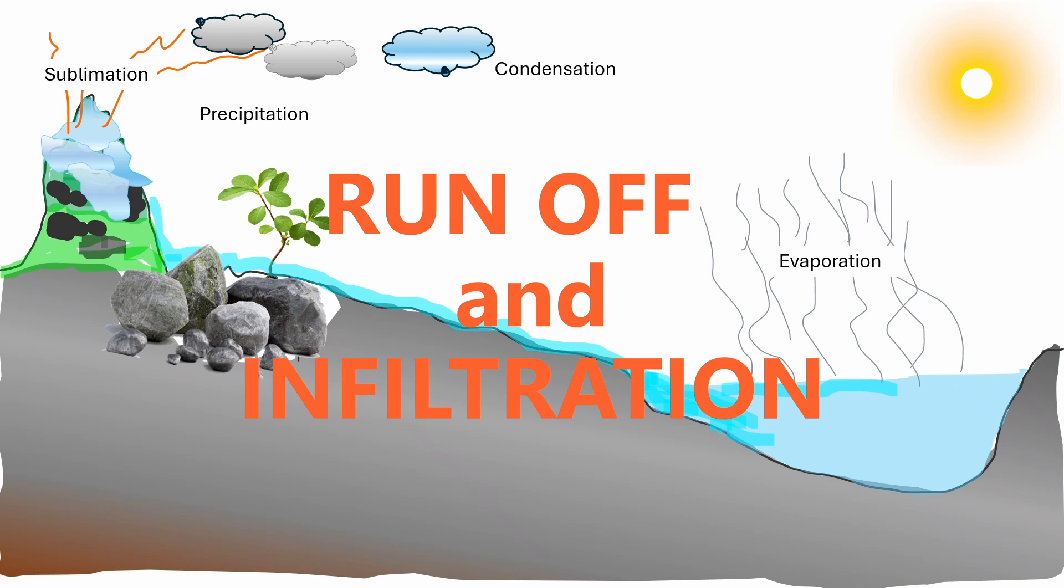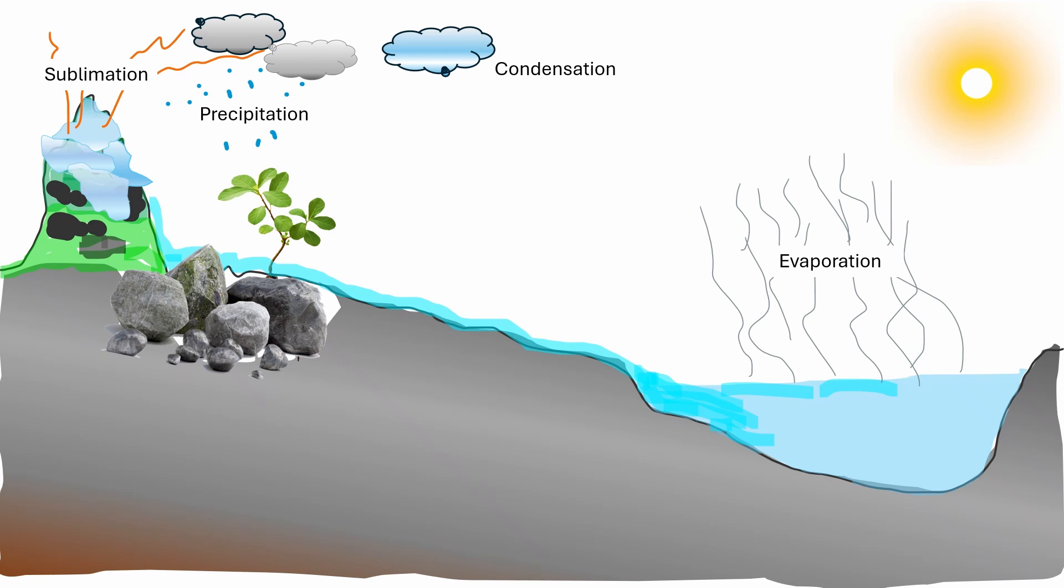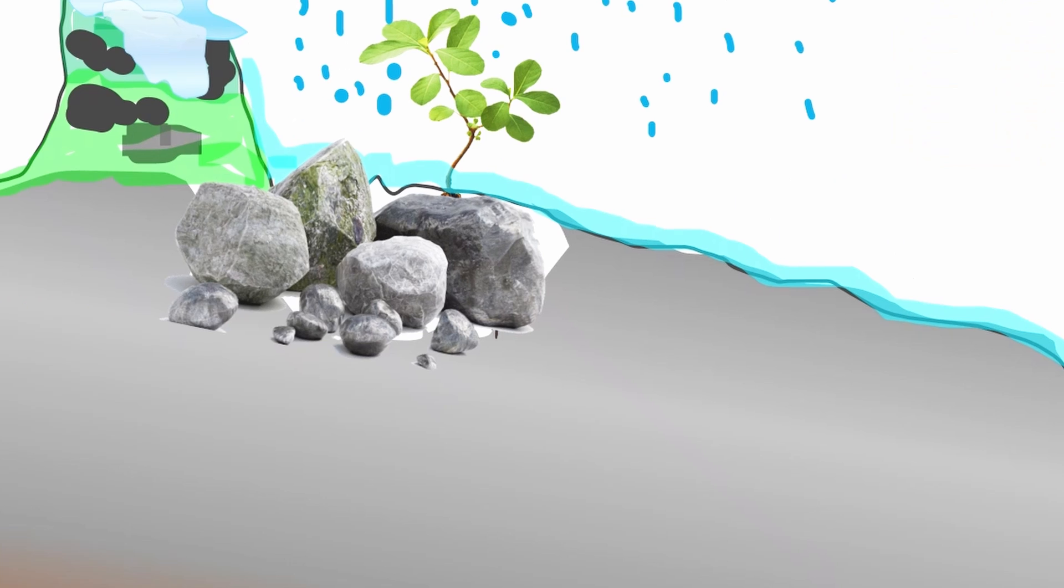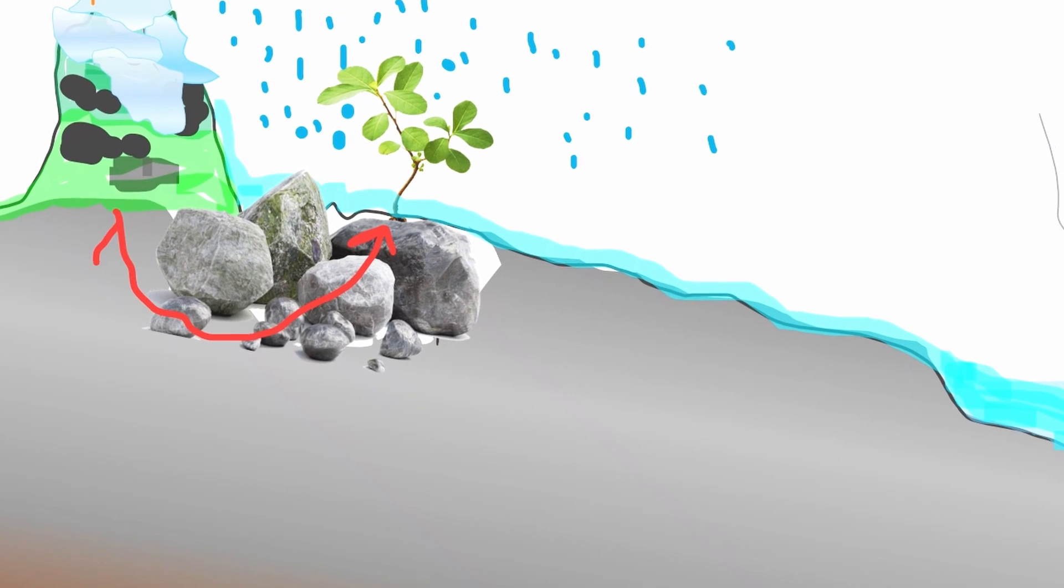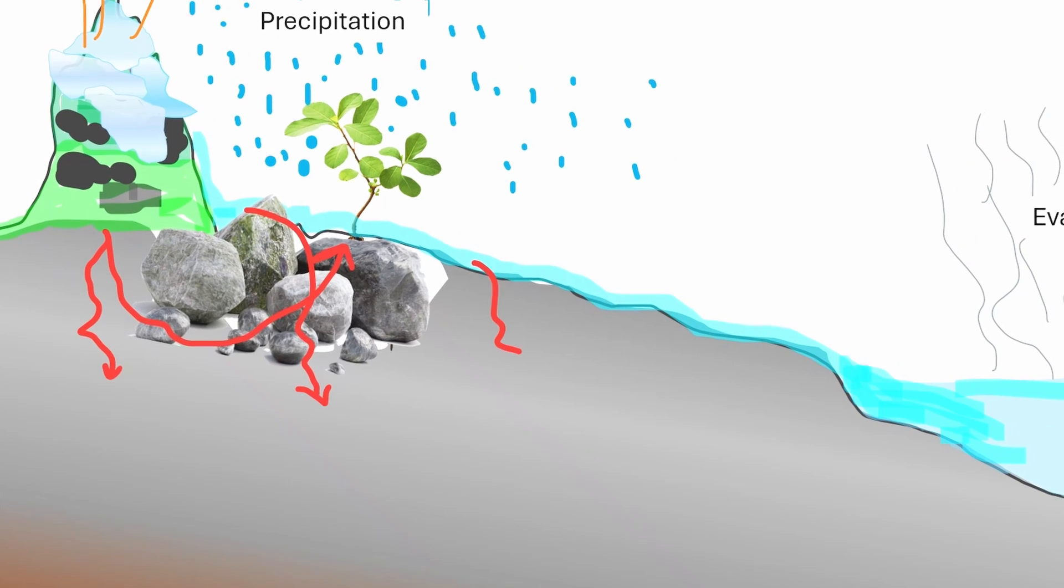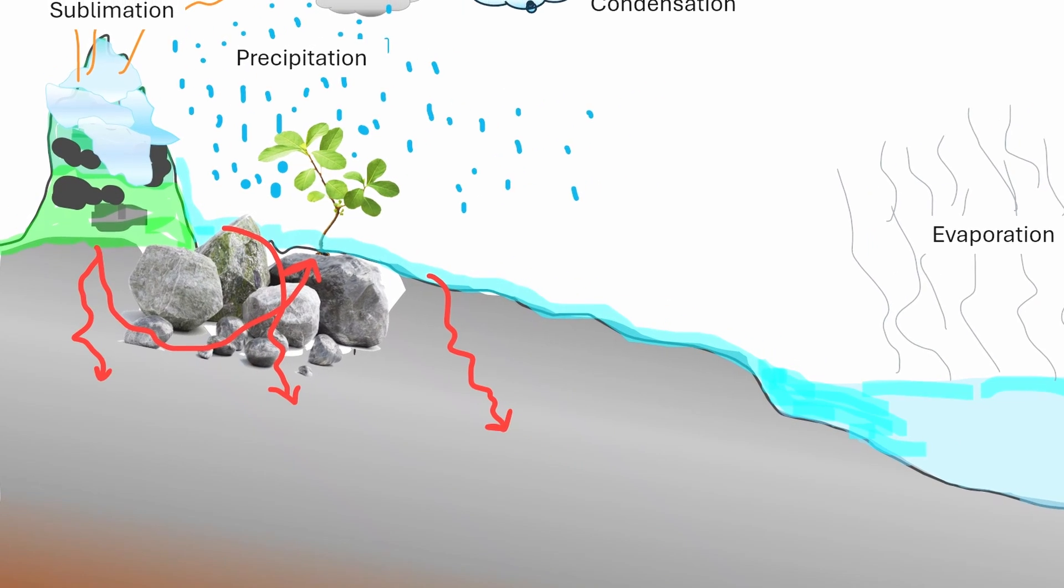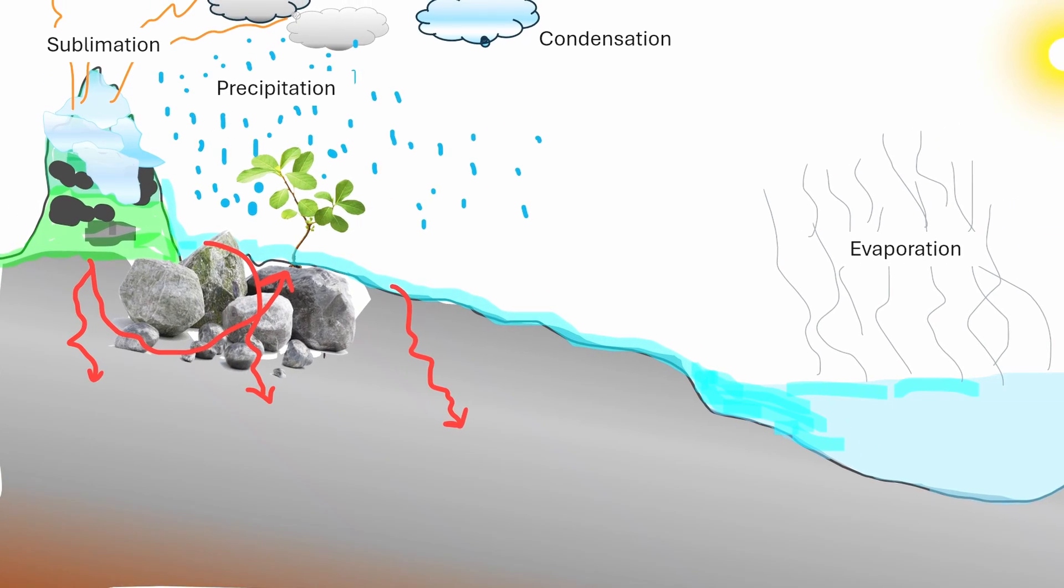Runoff and infiltration: Once precipitation reaches the Earth's surface, it follows two primary pathways. Some of the water is absorbed by the soil through a process called infiltration. Infiltrated water may be taken up by plant roots or percolate down to recharge groundwater reservoirs.